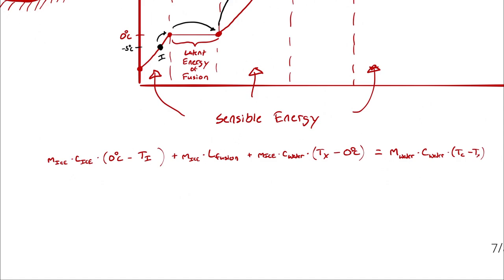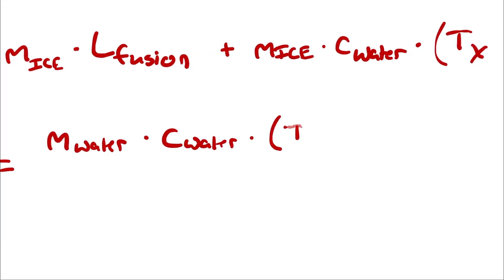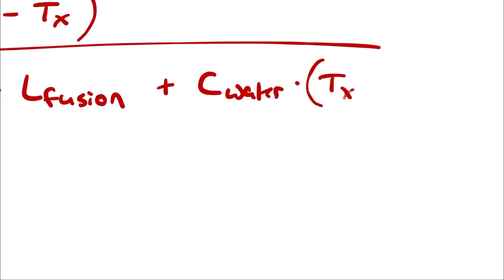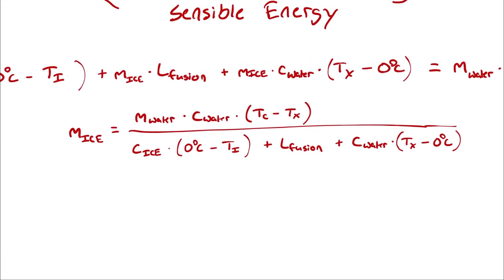So I could write mass of ice divided by mass of water equals C water times delta T divided by the quantity C ice times delta T plus latent heat of fusion plus C water times delta T. The mass proportion equals the energy proportion. Speaking of writing this differently, I want the mass of ice for now, so I can solve this for mass of ice. I have enough information to determine the mass of water, I can look up the specific heat capacity of water, I know Tc, Tx, C ice, Ti, and the latent heat of fusion.